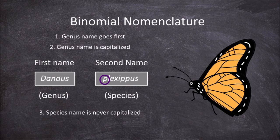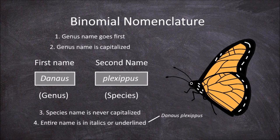The fourth rule is that the entire name must be in italics, or underlined if written by hand. So if our example of the monarch butterfly was typed, it needs to be in italics. Often when written by hand, it is hard to show it is in italics, so there is the convention of it being underlined when written by hand.